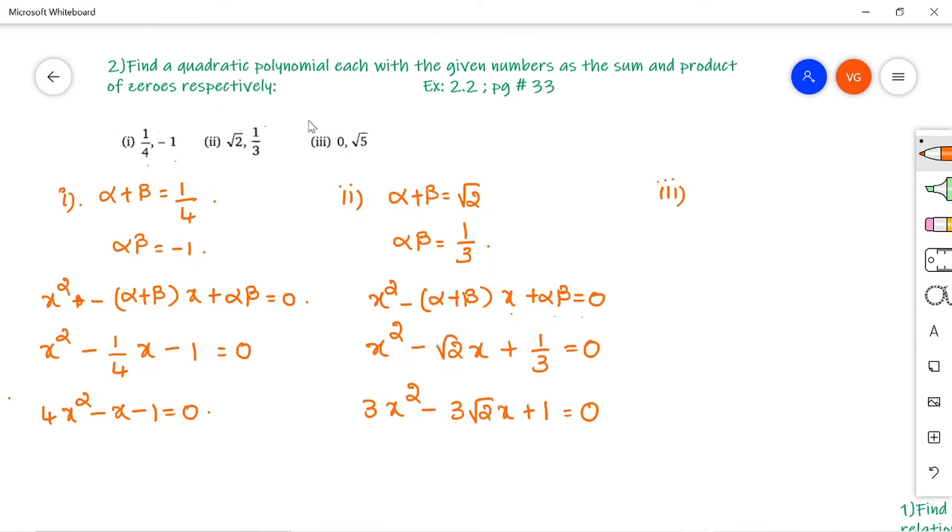Next problem: sum of zeros is 0 and product is √5. Writing the formula x² - (sum of zeros)x + (product) = 0. Since sum of zeros is 0, we have x² - 0·x + √5 = 0, which can be written as x² + √5 = 0.